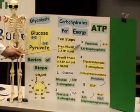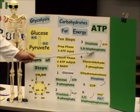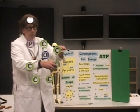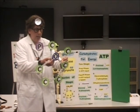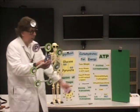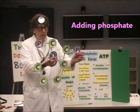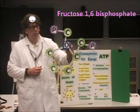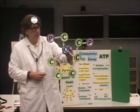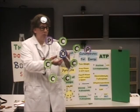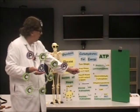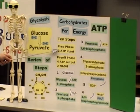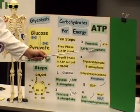Here we are at step 3. We're at fructose 1,6-bisphosphate when we add this second phosphate. Phosphate is a PO4 group — phosphate in the middle surrounded by four oxygens. There is the fructose 1,6-bisphosphate molecule. We needed ATP. Remember, that was part of our prep phase. We needed to add an ATP in the first step, and now in the third step we add that second ATP — that was the energy requirement we needed.